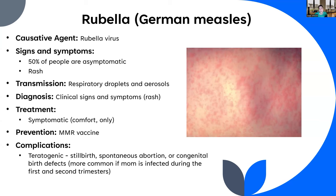Here's why we're particularly concerned about rubella: it's a teratogenic virus — it can impact the developing fetus. If a pregnant mother gets infected, this can result in stillbirth, spontaneous abortion (miscarriage), or congenital birth defects — particularly if infected during the first or second trimesters. Women who are pregnant or thinking about getting pregnant should get their MMR re-upped, because this is not something you want to accidentally acquire during the gestation process.